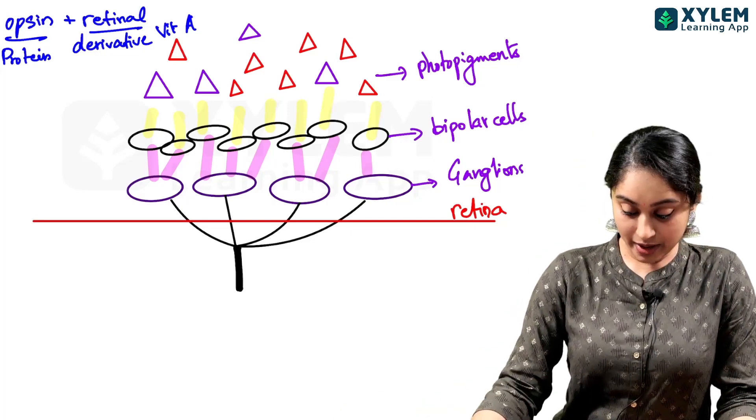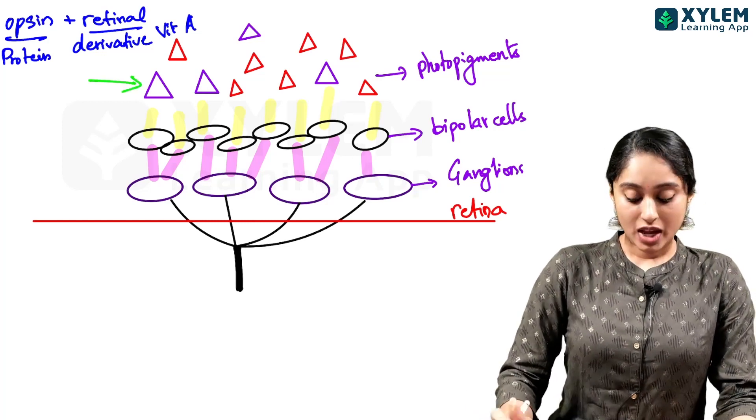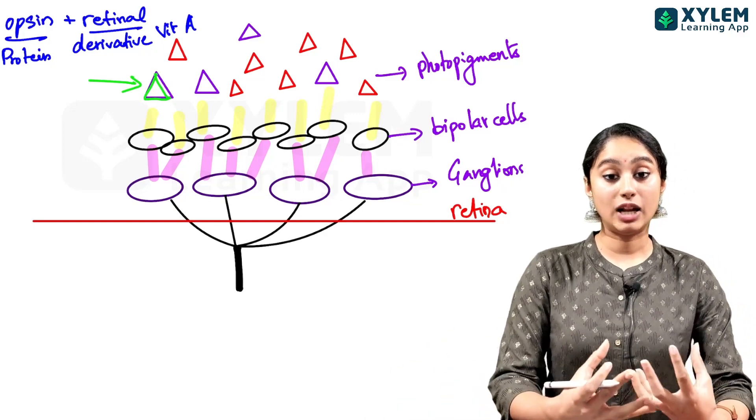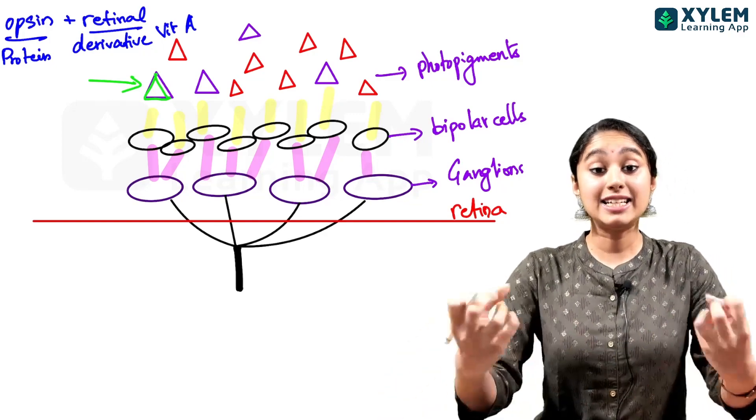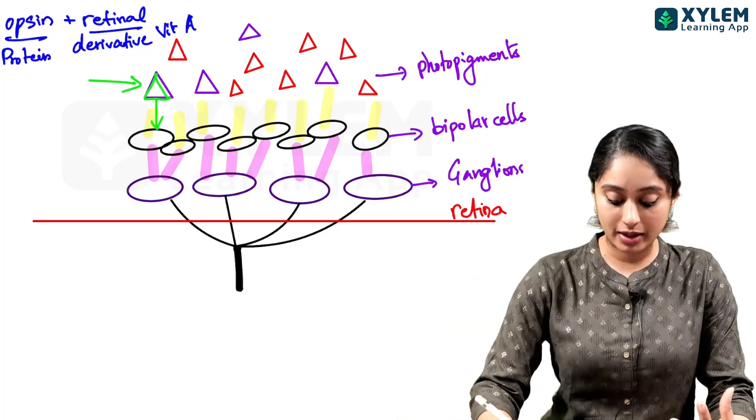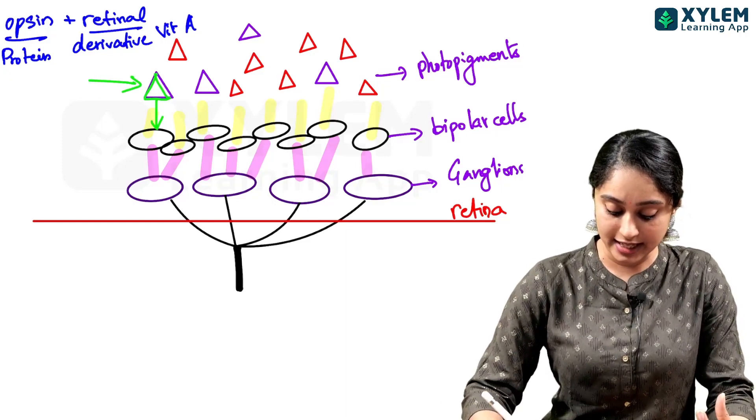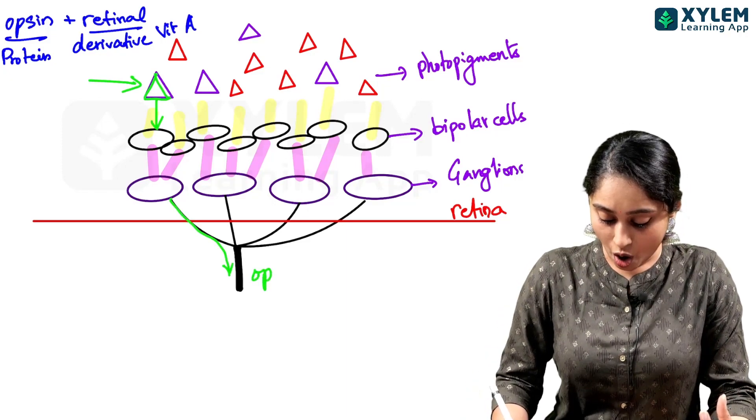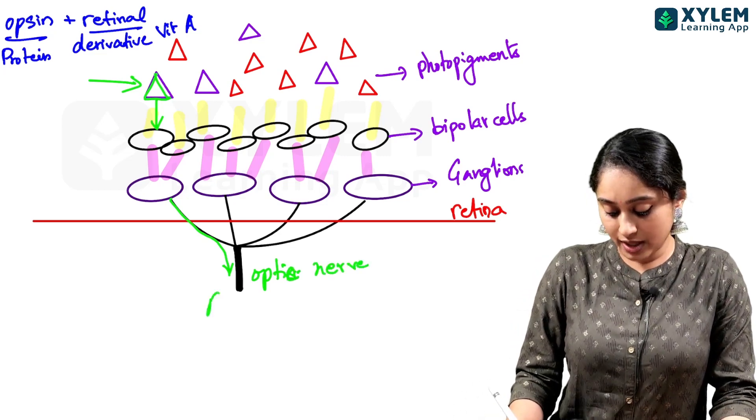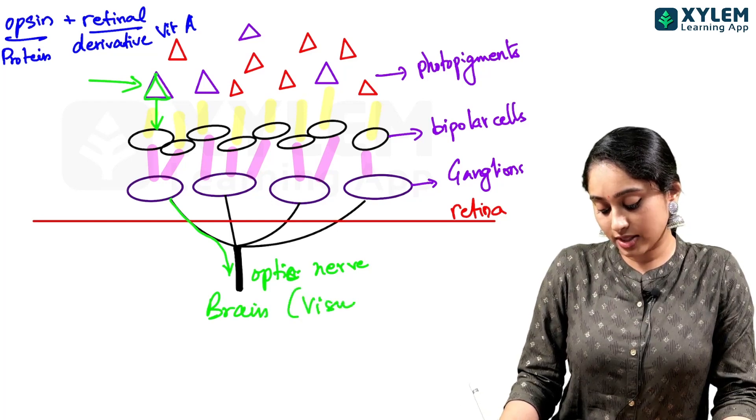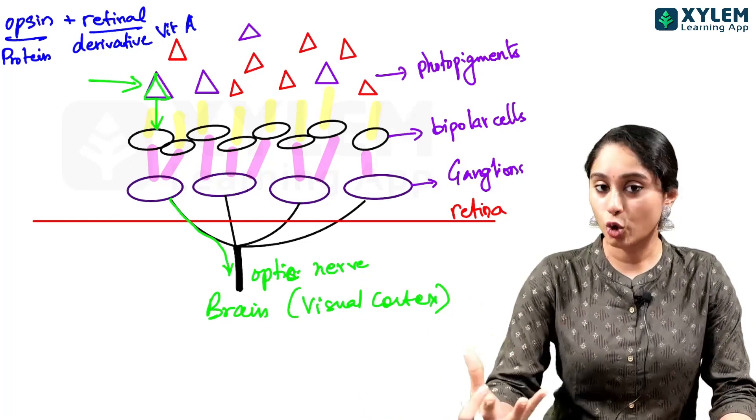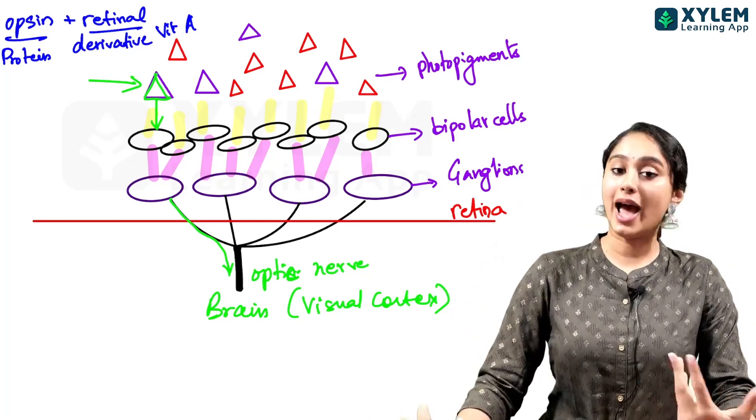When light hits the cell, the photopigments will dissociate. The opsin and retinal will dissociate. In the dissociation, it will send an impulse. The impulse is conducted through the bipolar cells, ganglion cells, and sent into the optic nerve. In the optic nerve, when we have the brain, visual cortex information. And that is how we will see the vision. We will see a clear picture and we will analyze it.